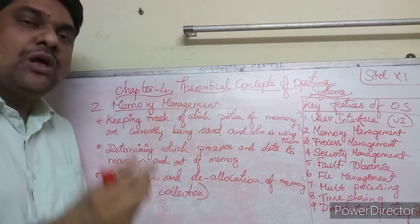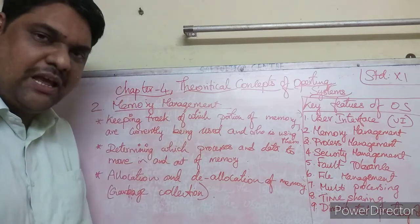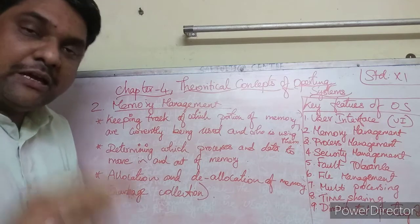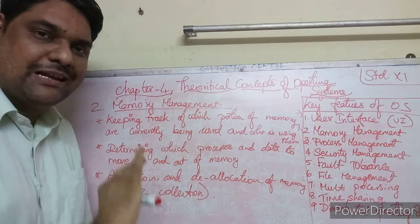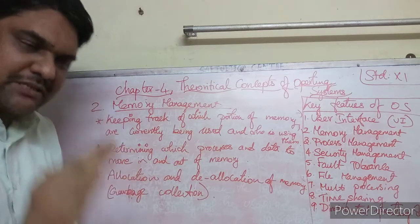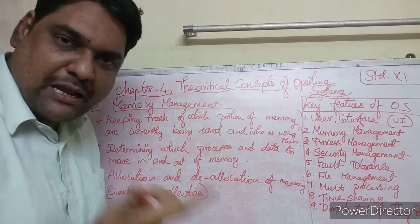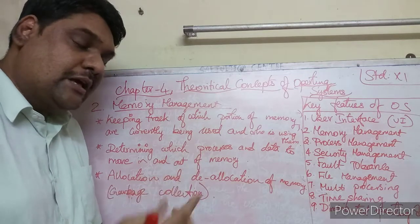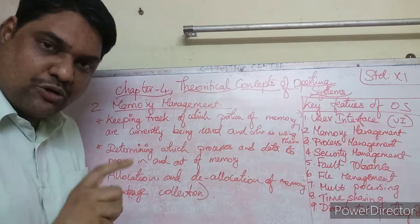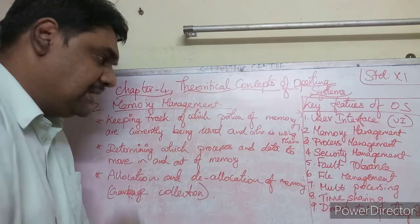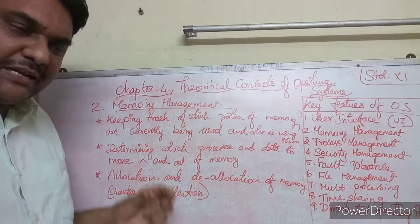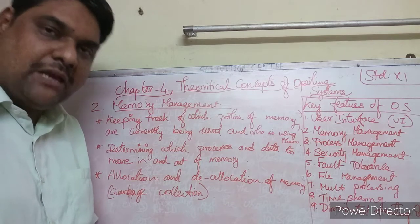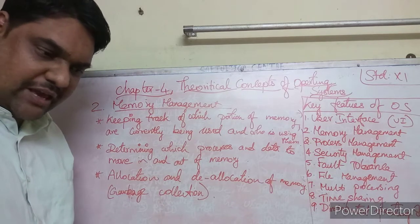The operating system handles the allocation of memory — loading data, words, or alphabets into memory storage. It also handles deallocation of memory, where data is erased from memory. This process of clearing unused memory is called deallocation.